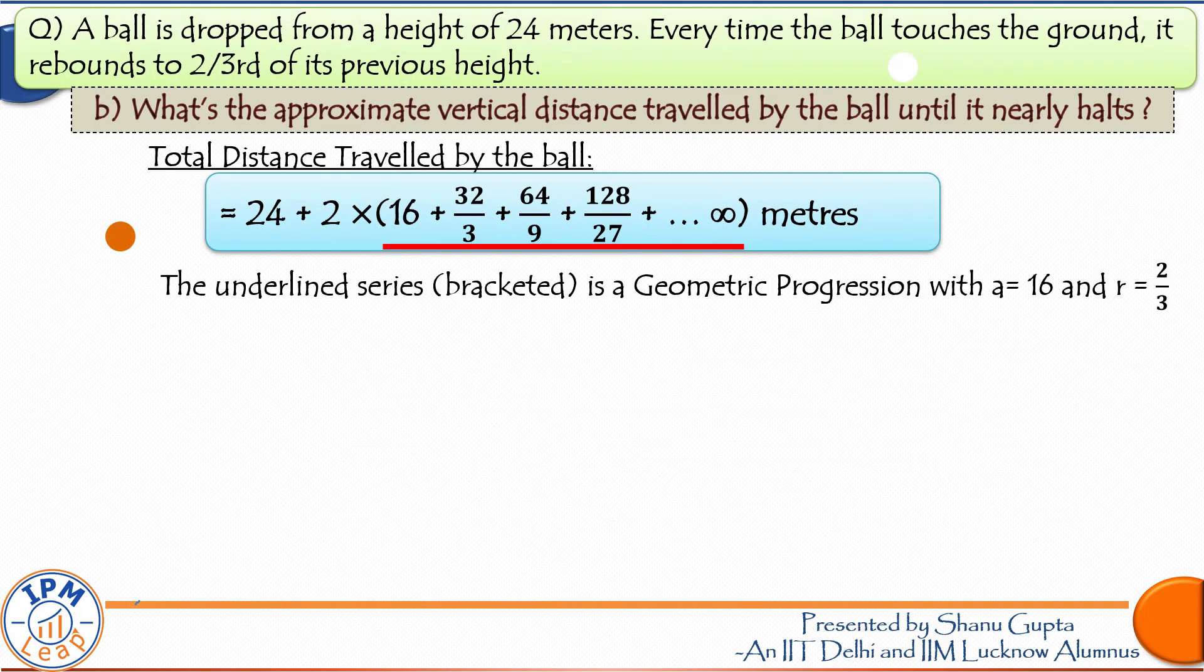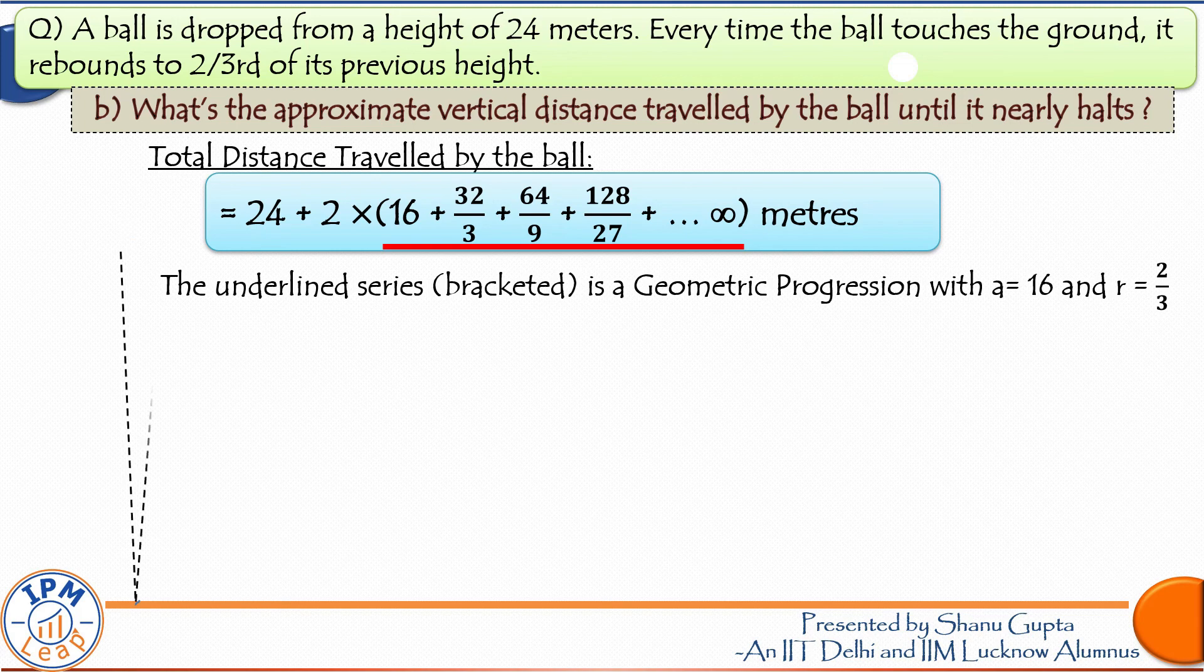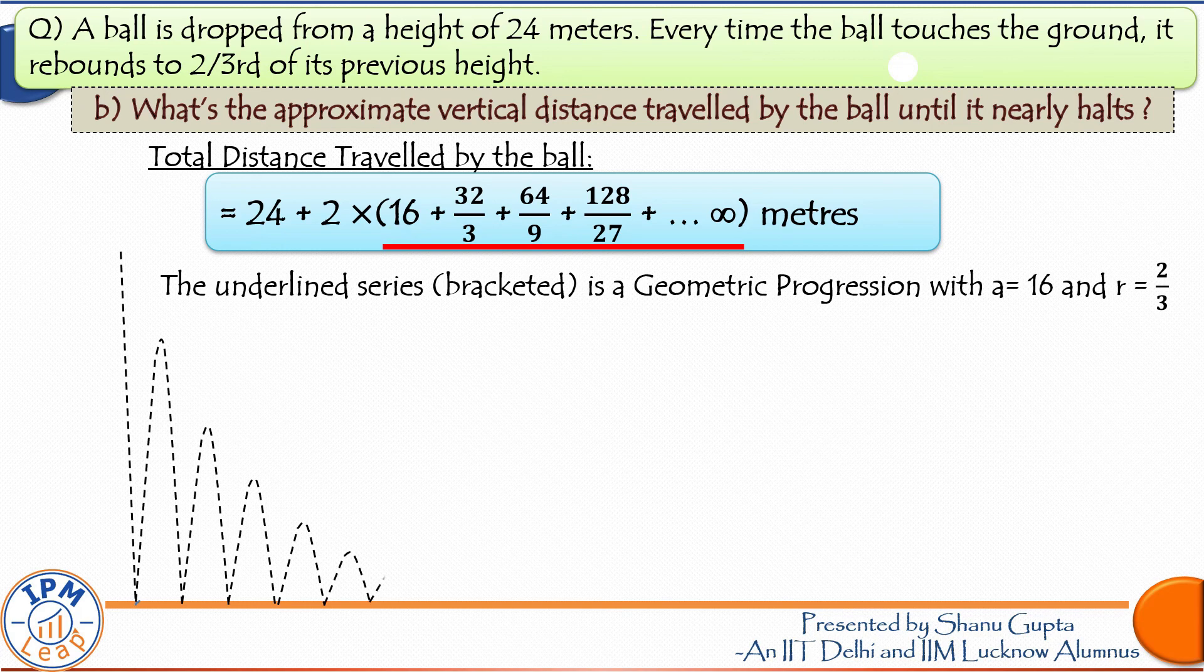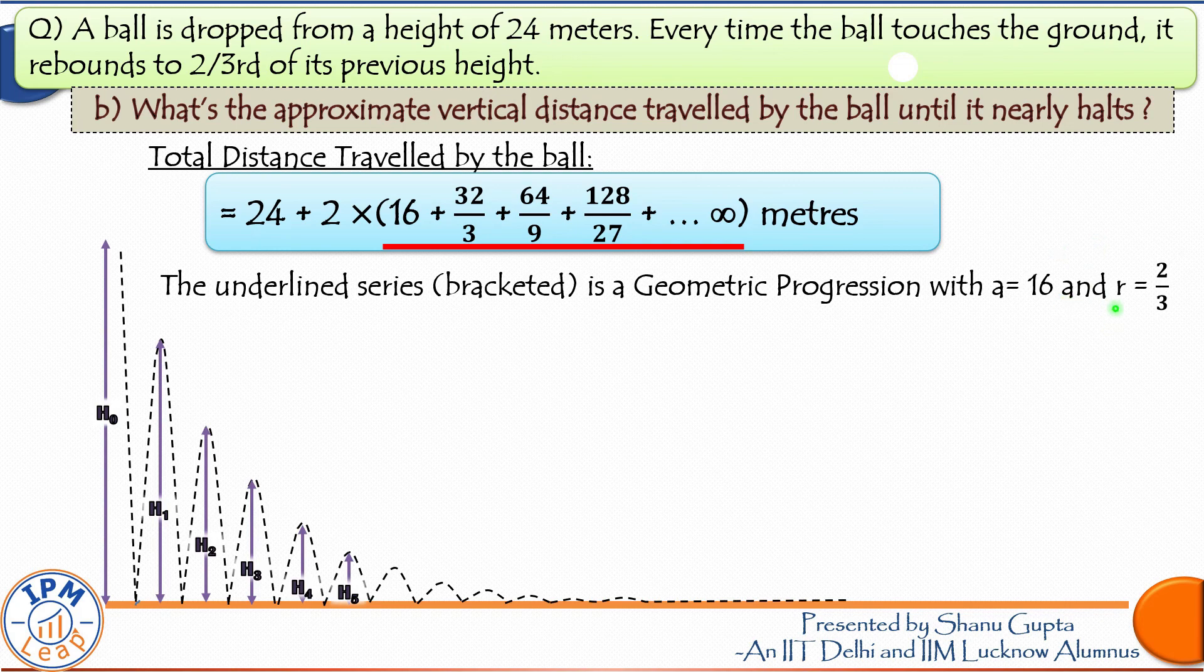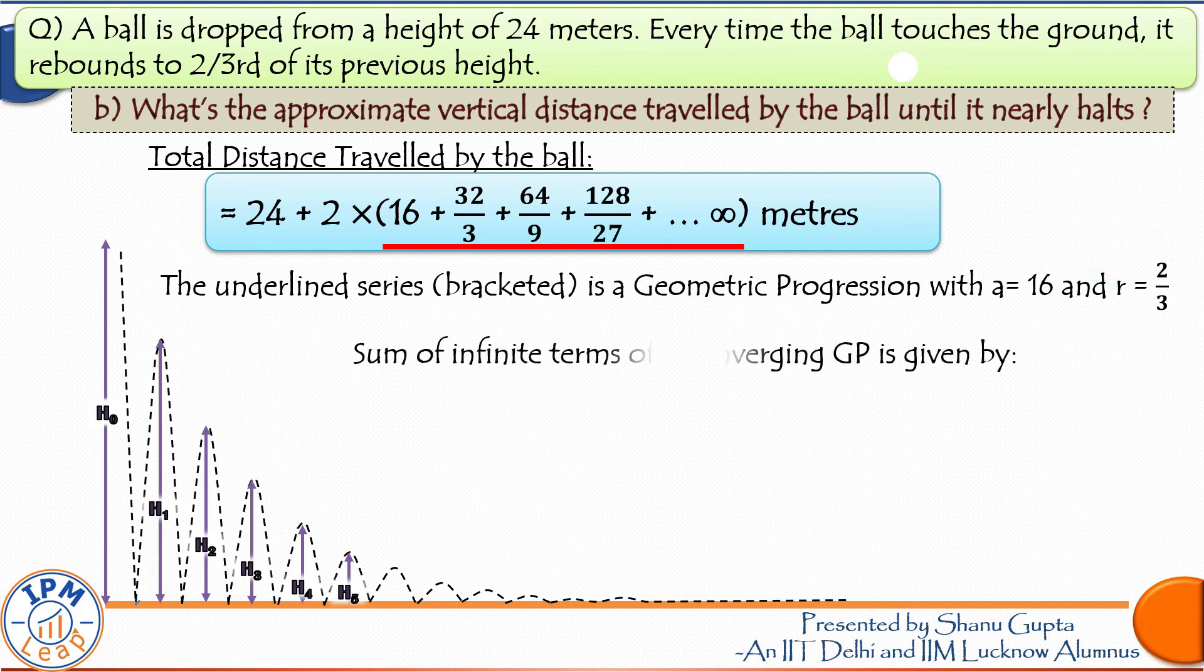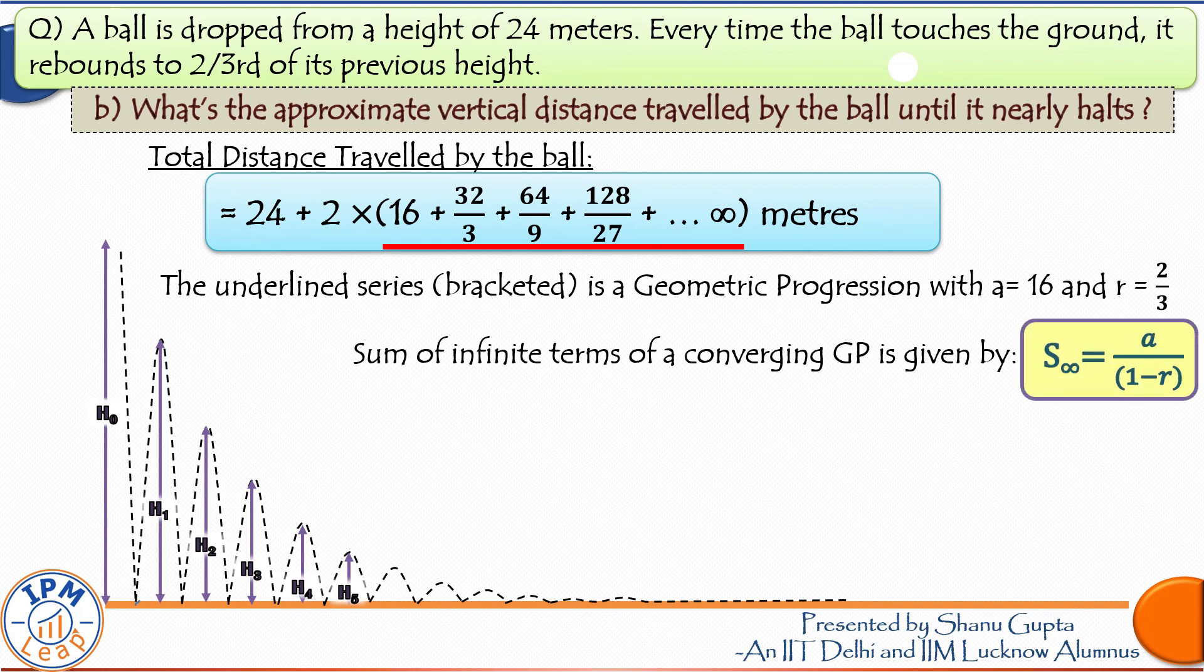In this geometric progression, the first term denoted by A is 16 and the common ratio denoted by R is 2 upon 3, and the number of terms is infinite. We know this GP is a converging one because the common ratio is less than 1. Sum of infinite terms of a converging GP is given by the expression A upon 1 minus R.